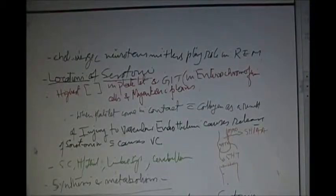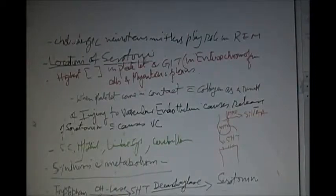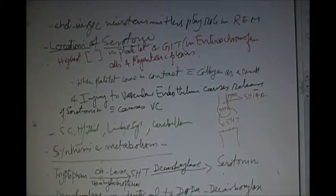The highest concentration of serotonin are found in platelets and in GIT. They are found in the enterochromaffin cells and in the myenteric plexus of the GIT. The myenteric plexus is between the outer longitudinal and inner circular layer of muscularis mucosa. When platelets come in contact with collagen as a result of tissue injury, the vascular endothelium causes the release of serotonin and that causes vasoconstriction.